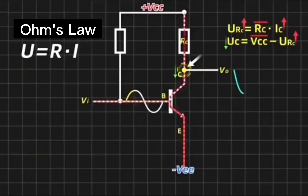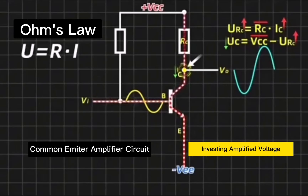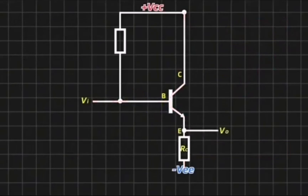In summary, as the input current signal increases, the voltage output from the collector to the load is amplified in the opposite direction. Similarly, the smaller the input current signal, the output voltage is also inversely amplified. This is the common-emitter amplifier circuit, which can reversely amplify the voltage.